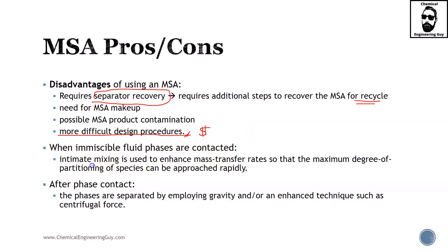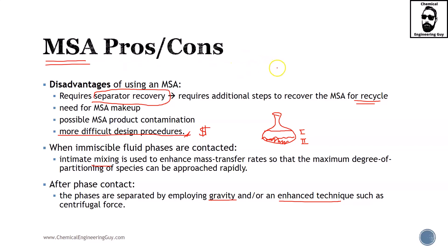When immiscible fluid phases are contacted, intimate mixing is used to enhance the mass transfer rates. In extraction, you have phase one and phase two — you can either leave them alone or mix them to ensure the mass transfer rate increases. After the phases contact, they are separated using either gravity or enhanced techniques such as centrifugal force, electrostatic charge, or decanting. MSA are the most common separating agents and we will see those in phase addition and phase creation.